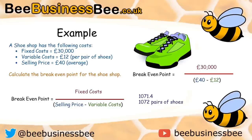£30,000 divided by 28 gives us 1,071.4 pairs of shoes. Now you might think to round that down as we do in maths, but in business we round it up, because if you sell 1,071 you're still making a loss. So you go to the nearest whole number — 1,072 would be the correct answer. That's the number of pairs of shoes you'd have to sell to breakeven. Technically at 1,072 you're making a slight profit, as the 0.4 is where you cross that magic line.